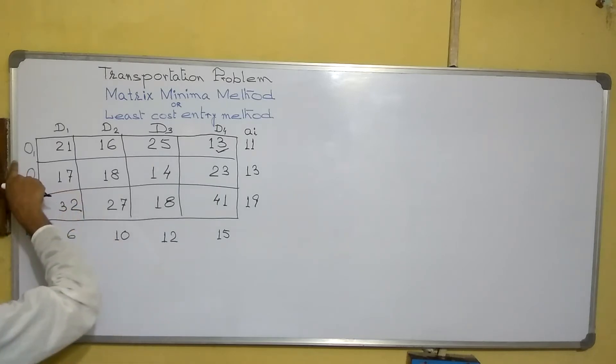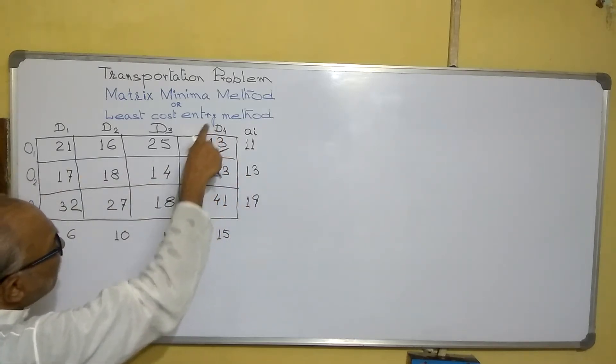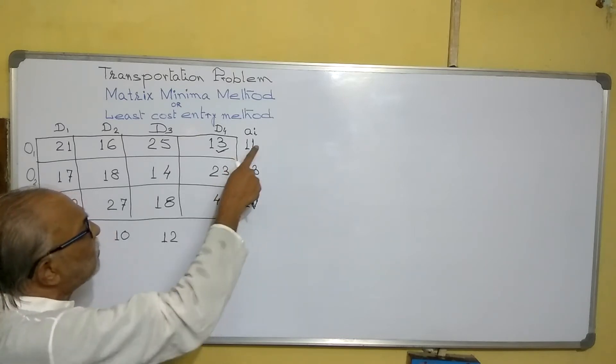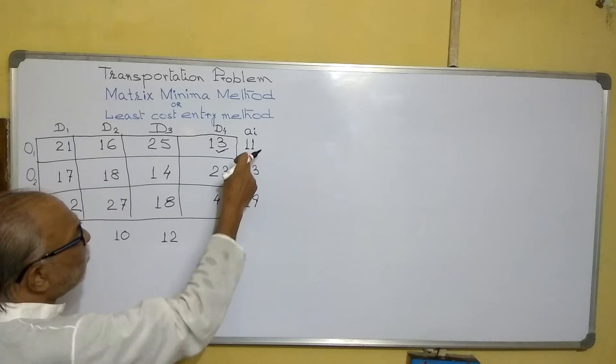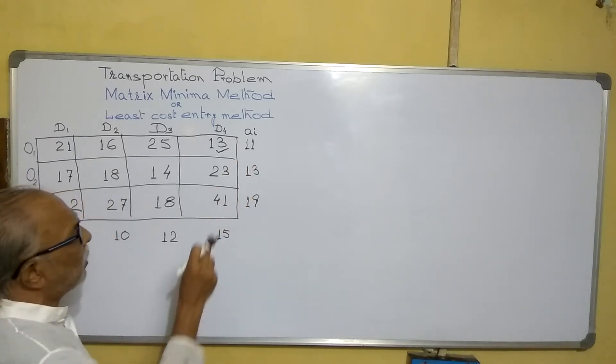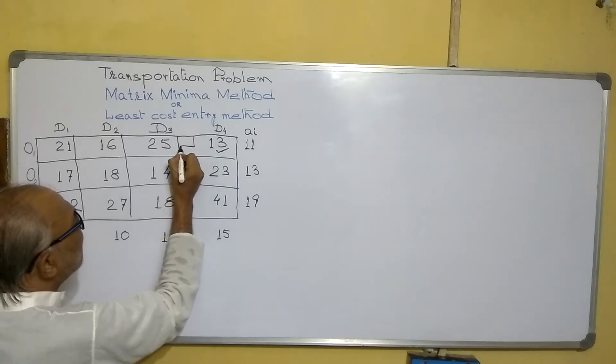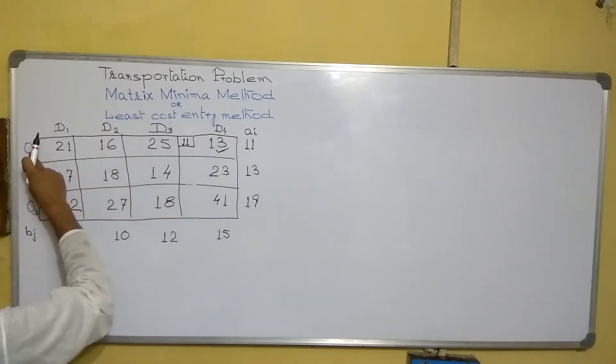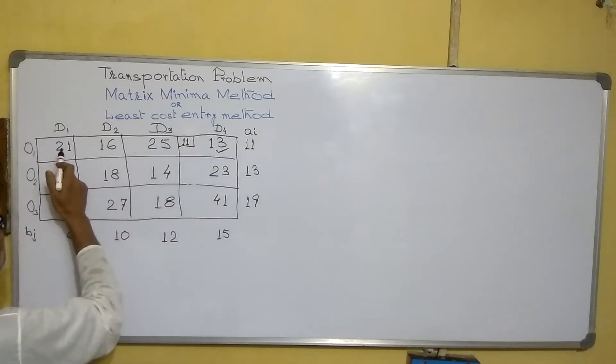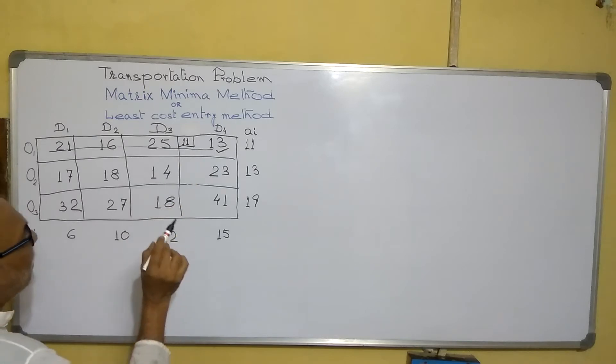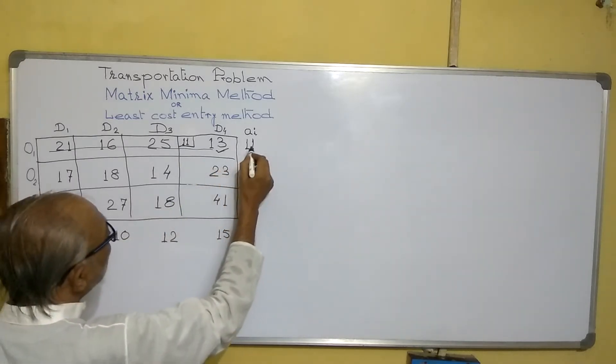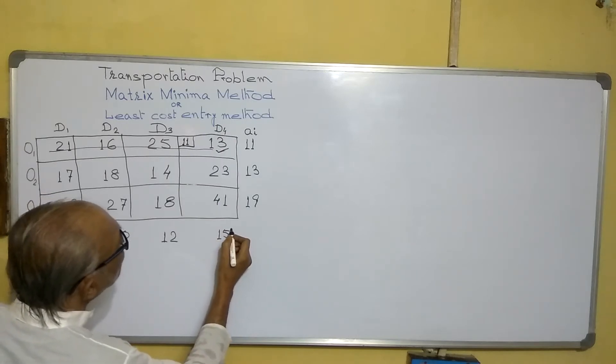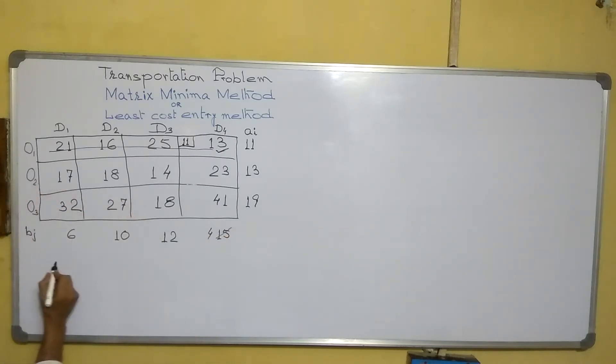Here the cost is 13 and the requirement in this destination is 15. Though requirement is 15, we can supply at most 11. So we'll supply the maximum. Out of 11 and 15, you have to choose the smallest one, which is 11. So we'll supply 11 here. After supply 11, from origin 1 total 11 was there, so we cannot supply anything. This is over.